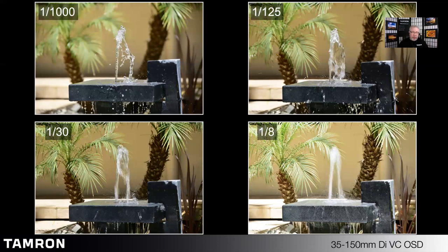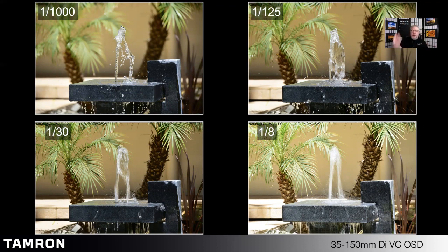Here's a great example. At one one-thousandth of a second, the water in this fountain — all the water droplets — are frozen in motion. But even if we drop to just one one-hundred-twenty-fifth of a second, still a very fast shutter speed, you see motion blur. When we go to a thirtieth of a second, it becomes a much more pronounced blur. And by the time we get to one eighth of a second, it's a flowing motion. You can use this to your advantage when you want to show motion of slow-moving subjects, or situations like waterfalls, where you want a long exposure to blur the subject while you have a strong stationary background.